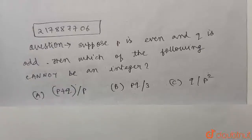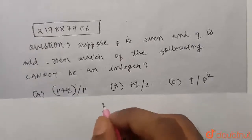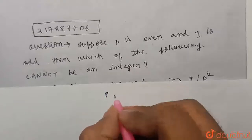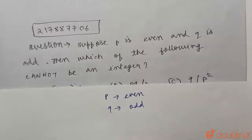Hello everyone. So the question is, suppose P is even and Q is odd. Then which of the following cannot be an integer? So let us see the first option. P plus Q upon P. So basically, P is even and Q is odd.